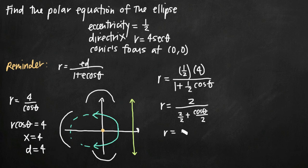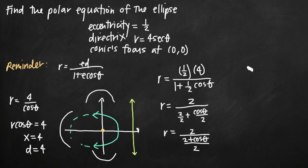Combining the denominator terms, we get (2 + cos(θ))/2. Now we have 2 divided by this fraction, so we multiply by its reciprocal: 2 × 2/(2 + cos(θ)).